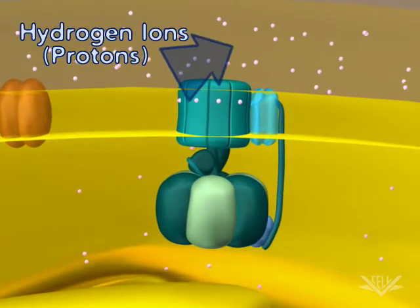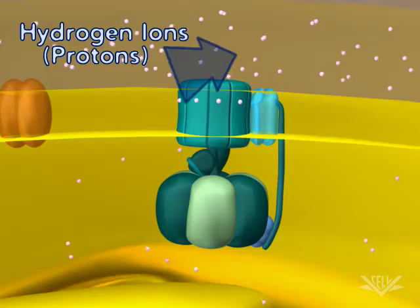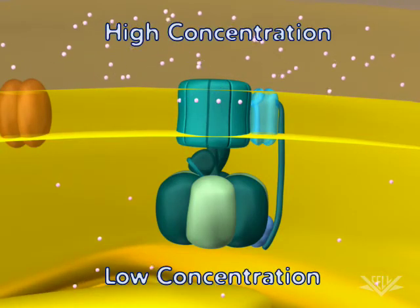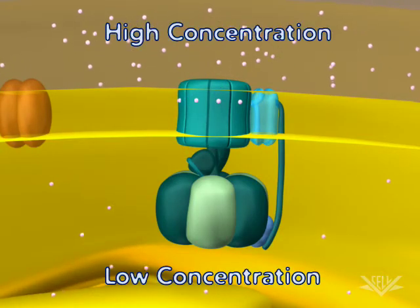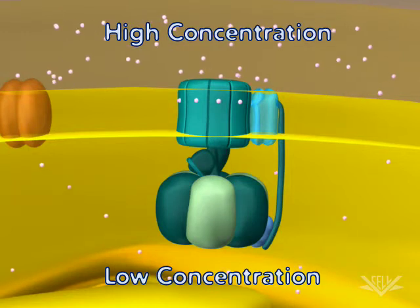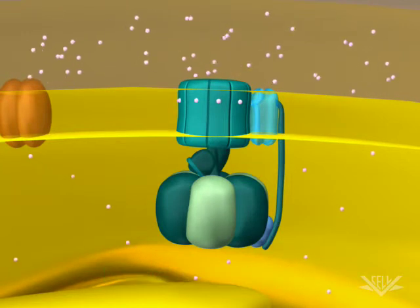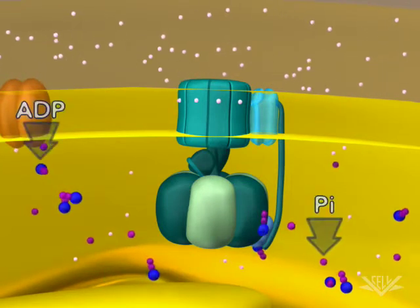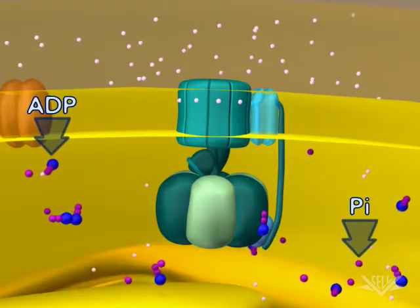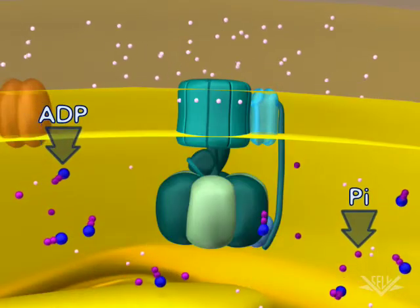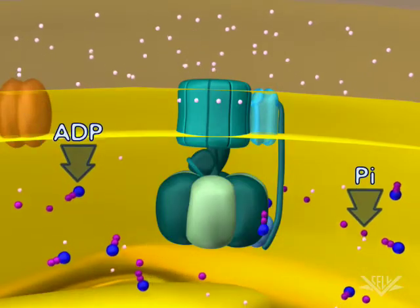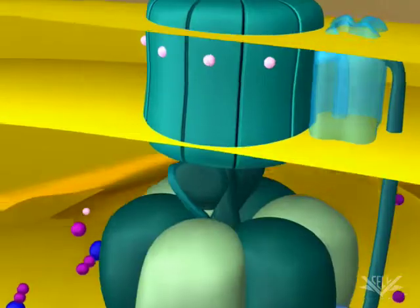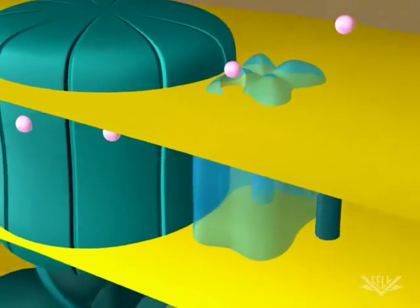Notice the large difference in the number of hydrogen ions on the two sides of the membrane. This difference is a hydrogen ion, or proton, concentration gradient. The energy associated with this gradient is used to synthesize ATP from ADP and Pi. This occurs at the ATP synthase complex.